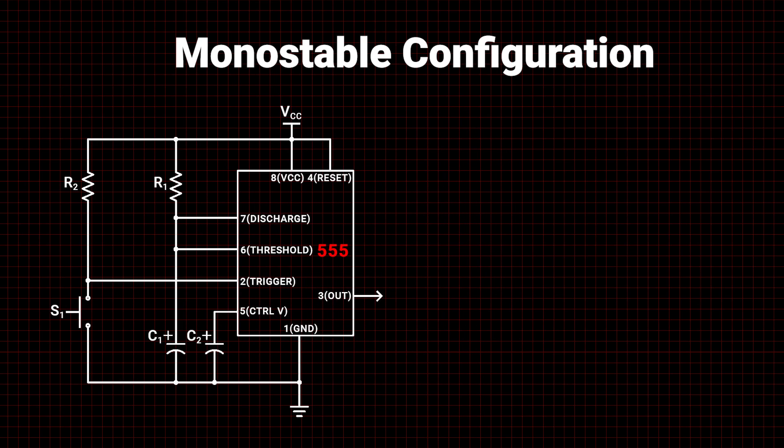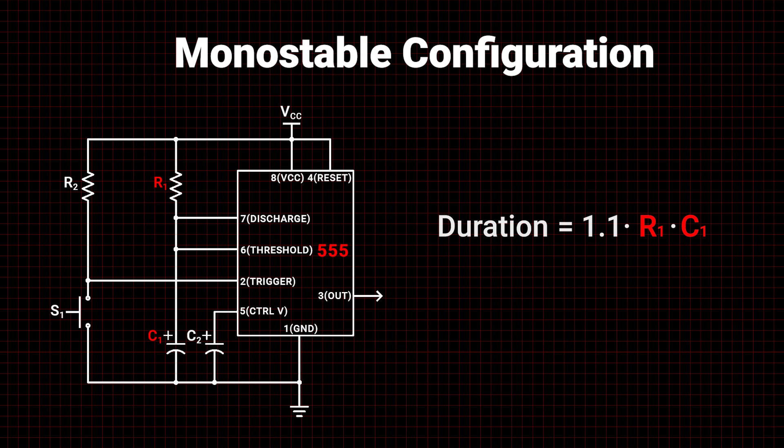With a monostable configuration, changing the values of R1 or C1 will directly affect the output pulse duration.